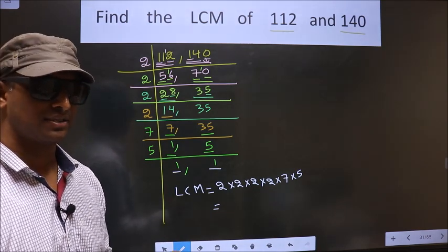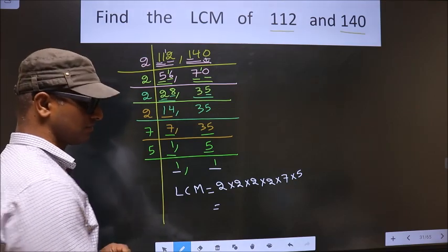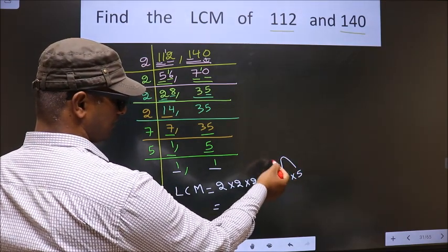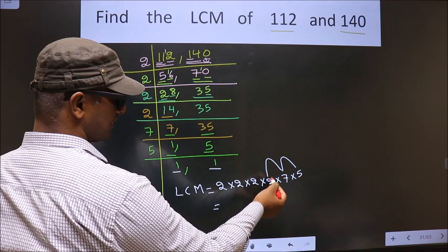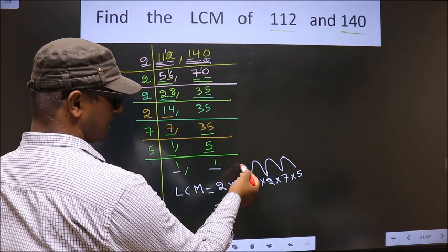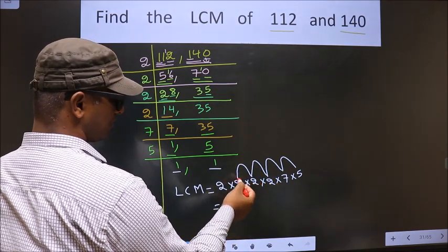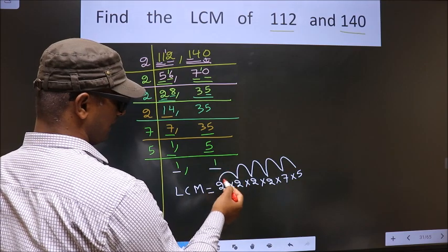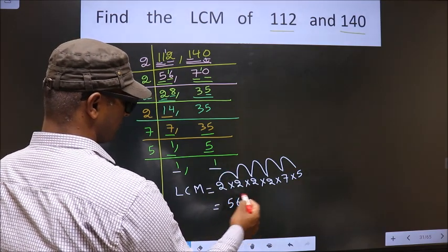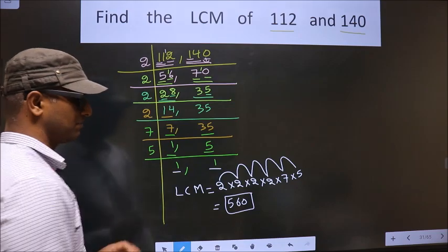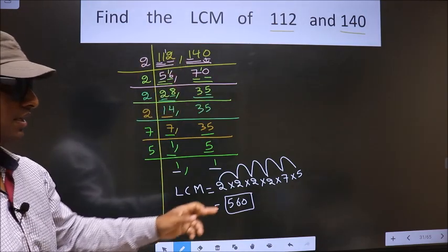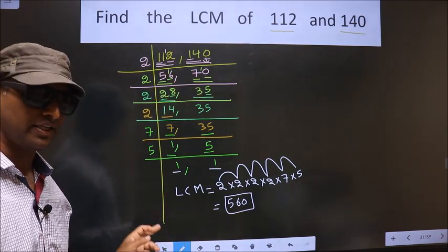Let us multiply: 5 × 7 = 35; 5 × 2 × 2 = 70; 70 × 2 = 140; 140 × 2 = 280; 280 × 2 = 560. So 560 is our LCM.